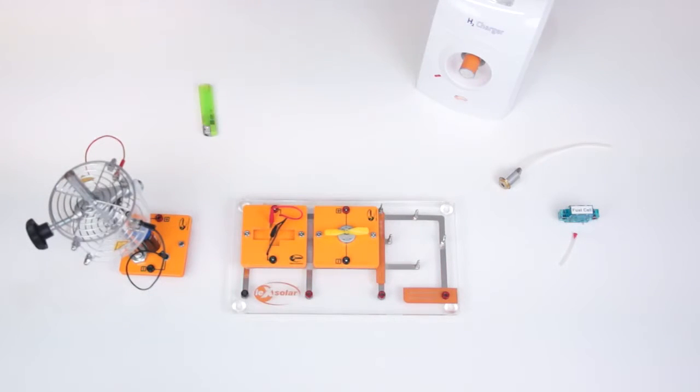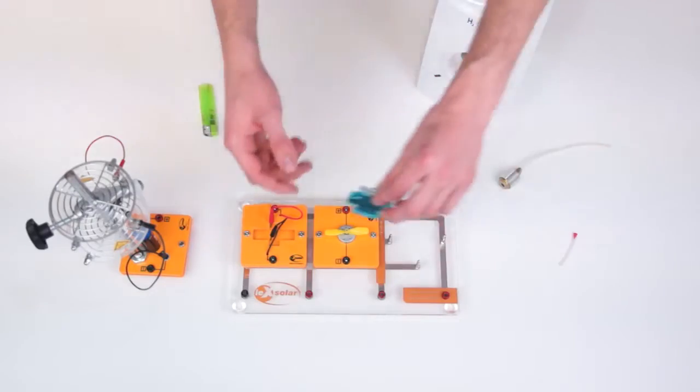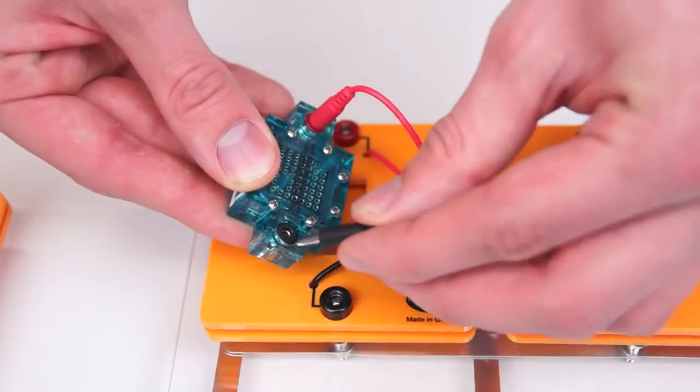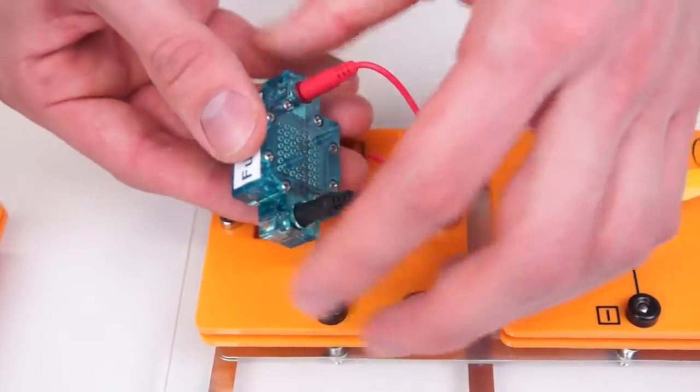We then take the PEM fuel cell and plug in the connections of the module plate. It is important to ensure that the polarity is correct. That is red to red and black to black.